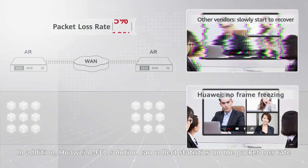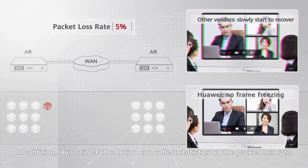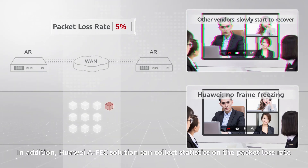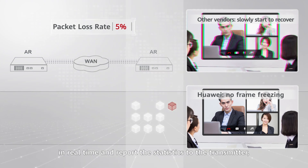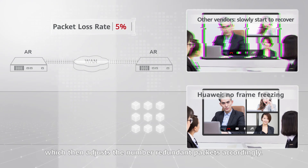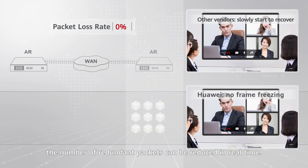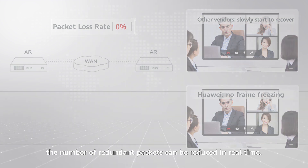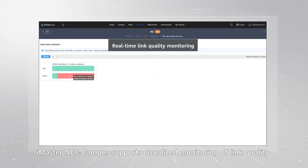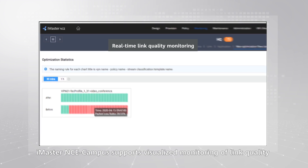In addition, Huawei's FEC solution can collect statistics on the packet loss rate in real time and report the statistics to the transmitter, which then adjusts the number of redundant packets accordingly. When the network quality starts to recover, the number of redundant packets can be reduced in real time.